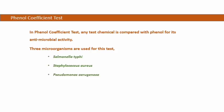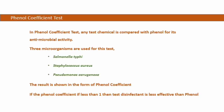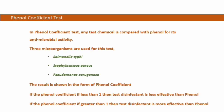Test perform kiya jaata hai organisms like Salmonella typhi, Staphylococcus aureus, aur Pseudomonas aeruginosa par. Test ke baad jo result aata hai use phenol coefficient ke roop mein calculate kiya jaata hai. Agar kisi disinfectant ka phenol coefficient more than one hota hai, to wo disinfectant phenol se zyada effective hai. Aur agar kisi disinfectant ka phenol coefficient less than one hai, to wo disinfectant phenol se less effective hota hai.